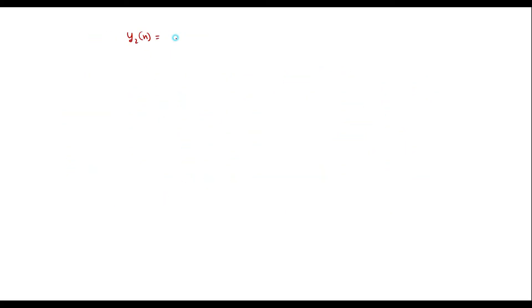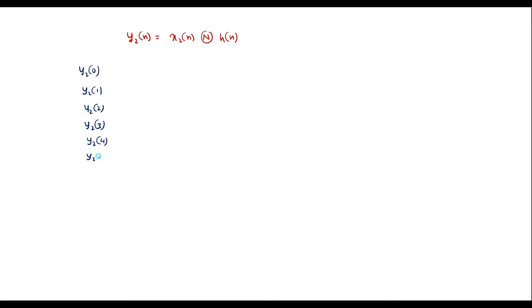Now find y2[n] = x2[n] ⊛ h[n]. The output vector has 8 samples: y2[0], y2[1], y2[2], y2[3], y2[4], y2[5], y2[6], y2[7], varying from 0 to 7.